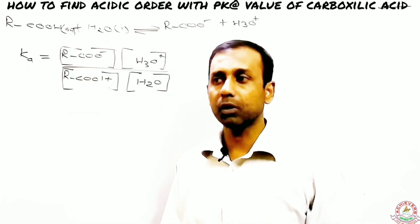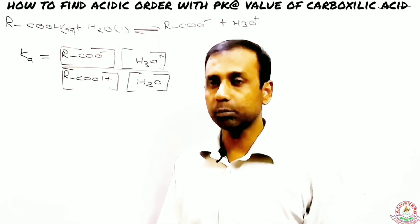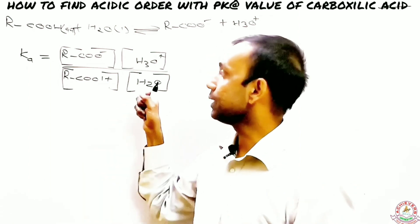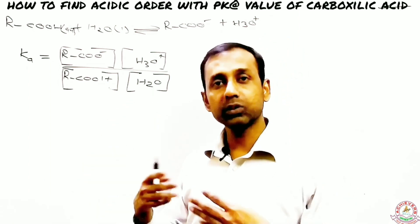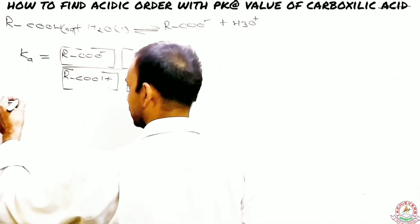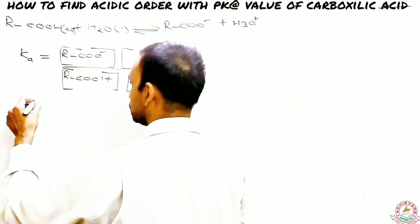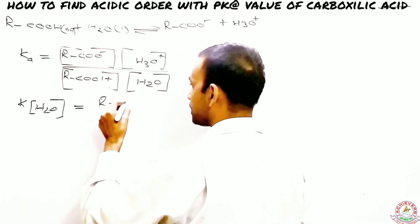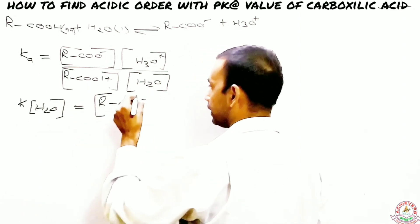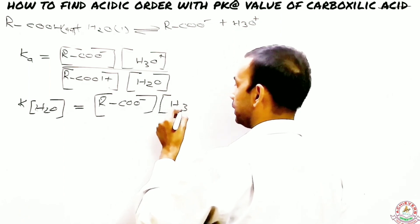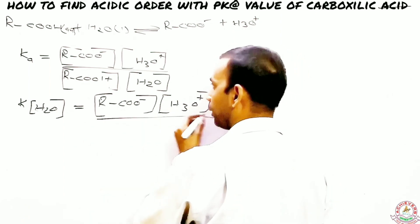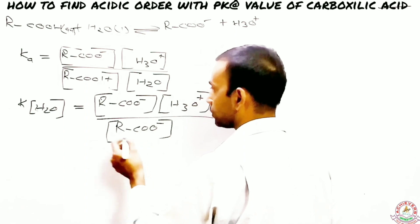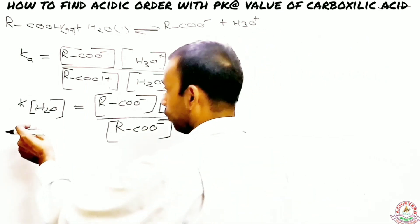The concentration of water is extremely large compared to the carboxylic acid in a highly dilute solution, so the concentration of water is treated as a constant. Therefore, K·[H₂O] equals the concentration of RCOO⁻ multiplied by H₃O⁺, divided by the concentration of the carboxylic acid RCOOH.